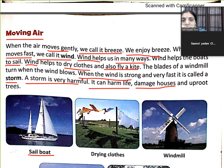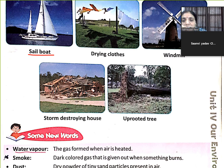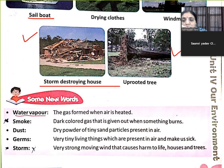Storm can damage houses — houses ko damage kar deta hai. It can uproot trees — pedon ko bhi uproot karta hai, pedon ko bhi gira deta hai. Storm destroys houses and uproots trees.